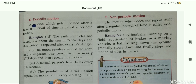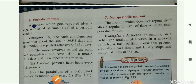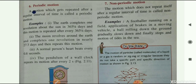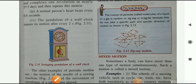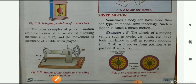Non-periodic motion is motion that does not repeat itself after a regular interval of time. Examples include a footballer running on a field, application of brakes in a moving vehicle, a ball rolling down that gradually slows and stops, and the motion of tides in the sea. The motion of molecules of a liquid or gas is random, zigzag, or irregular — they do not follow any specific path or direction, so it is known as zigzag motion.